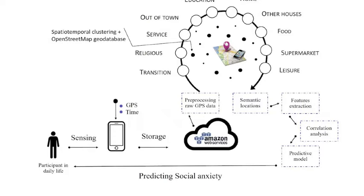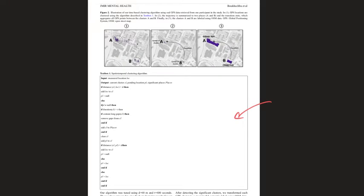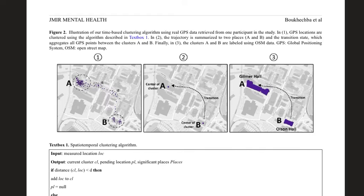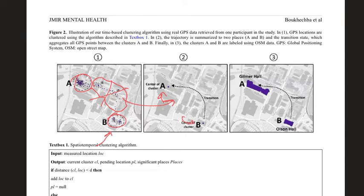The social anxiety level was originally assessed via the SIAS scale. The algorithm is also shown: from many location readings, the clustering algorithm identifies intermediary locations that are removed, and the remaining clustered locations are mapped to cluster centers, then matched via the geodatabase to specific campus locations. Overall, the system moves from raw information to knowledge about individuals' locations.